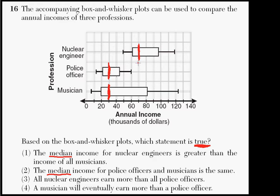So the median income for nuclear engineers is greater than the income of all musicians. So here's the median income for nuclear engineers, and it's saying this is greater than all musicians' income. In other words, no musician makes more than this amount of money right here. And that's just not true, because you can see that if I continue this line down, all these musicians out there make more than the median for a nuclear engineer. So that one is not true.